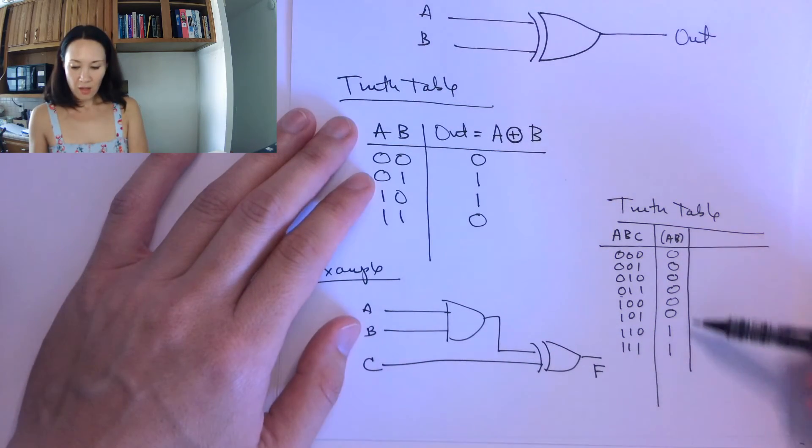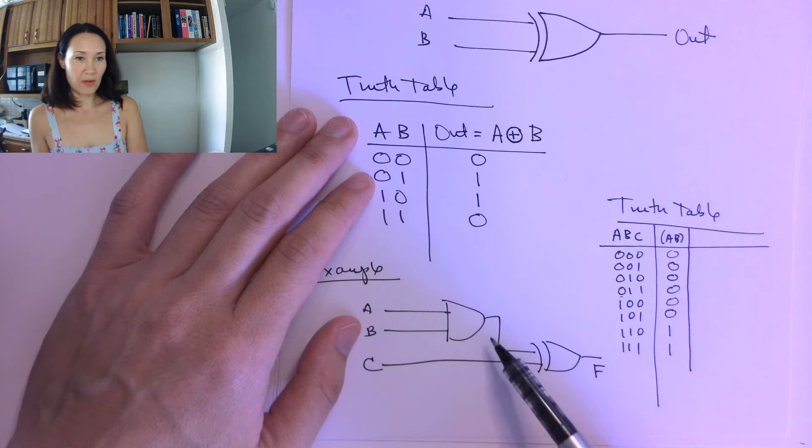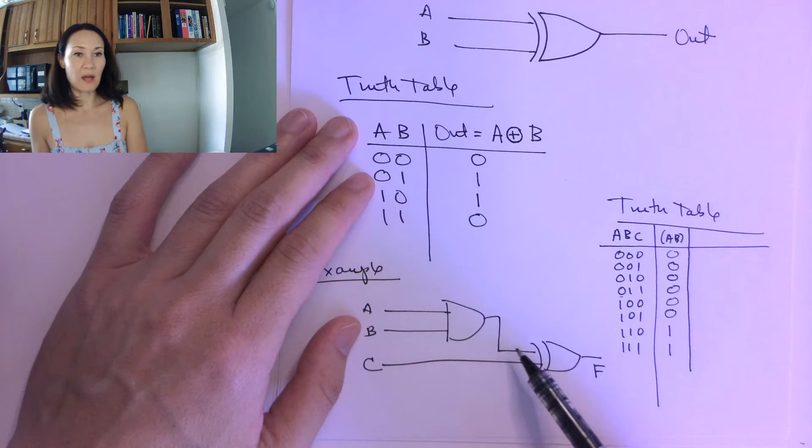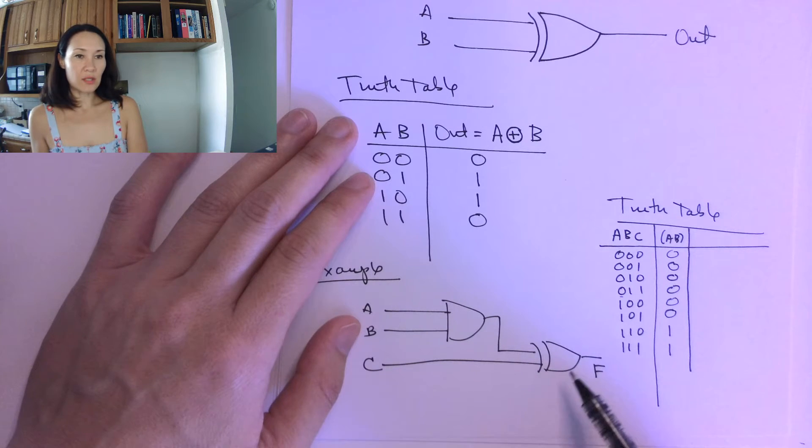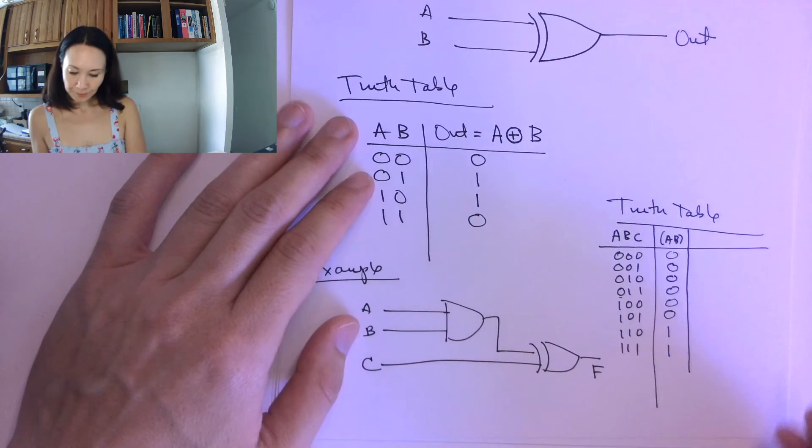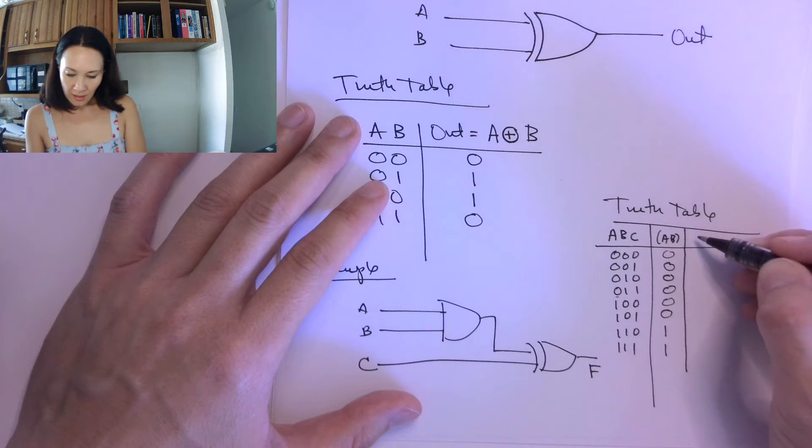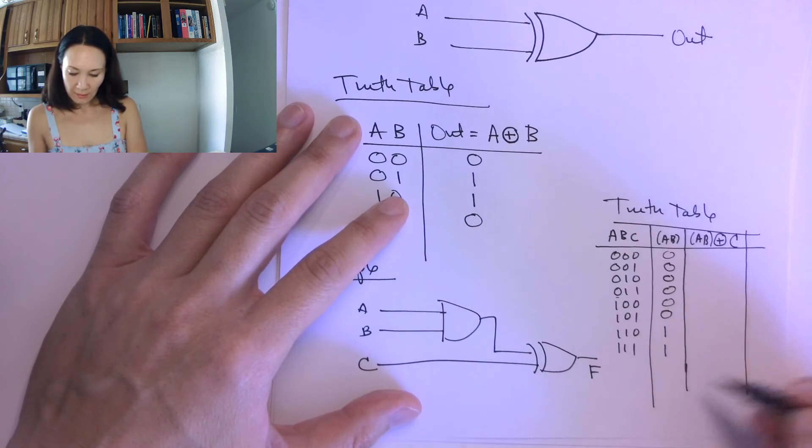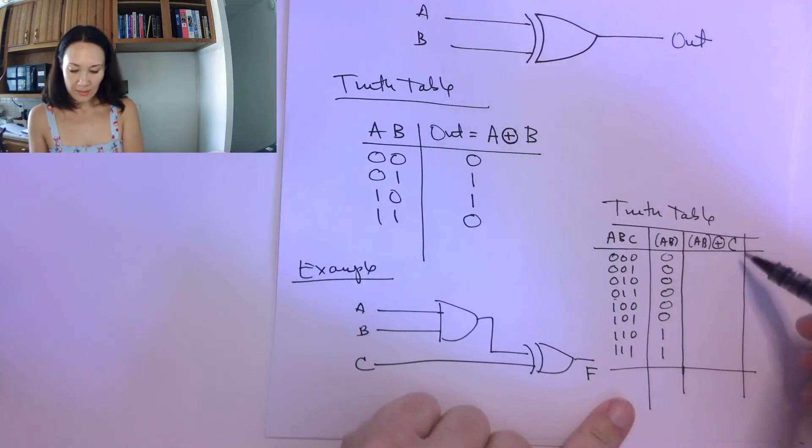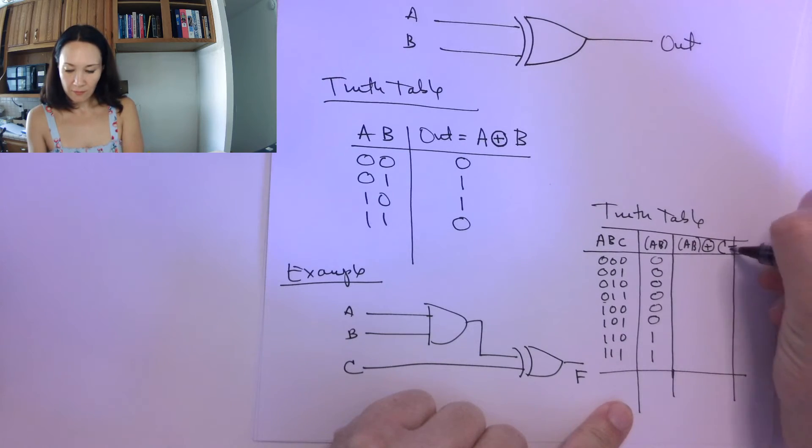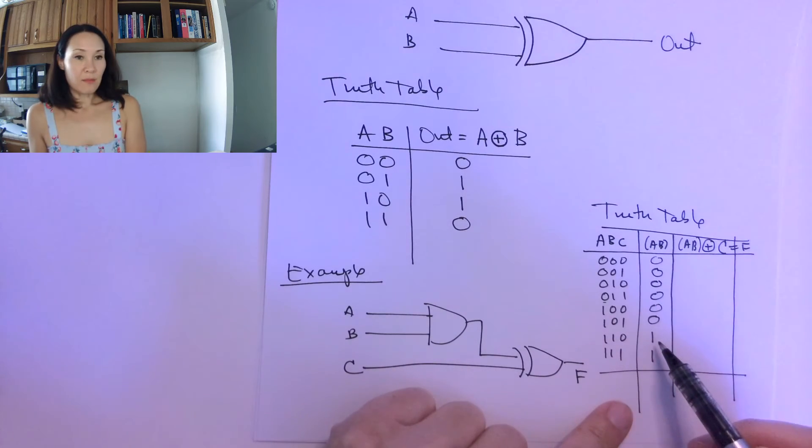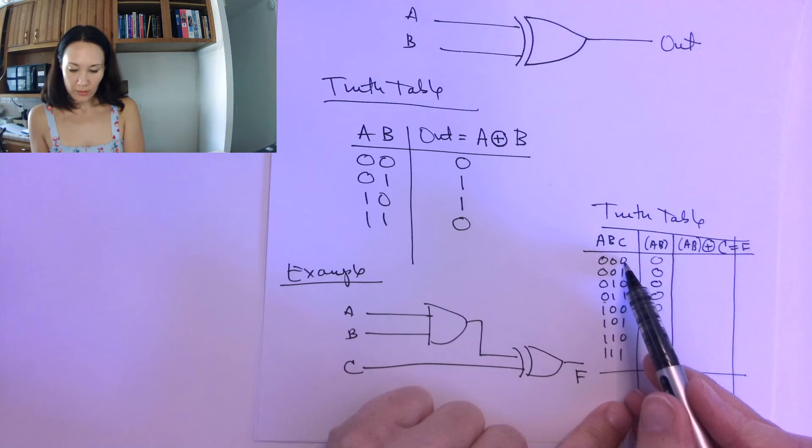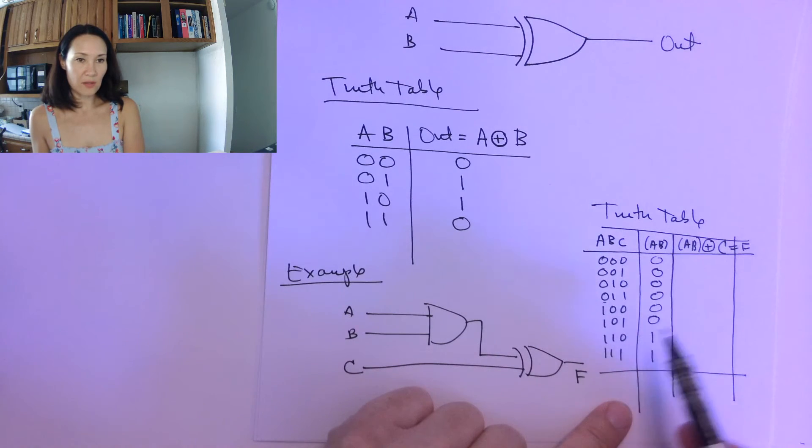So now this column, A AND B, is the result of A anded with B that comes on this line as one of the inputs to my XOR gate. So now I can take this A AND B and XOR it with C. So now what I get to do is I can make another column on my truth table, and this is going to give me my output F. And I take this column and I XOR it with just this C, whatever is coming in on this C.